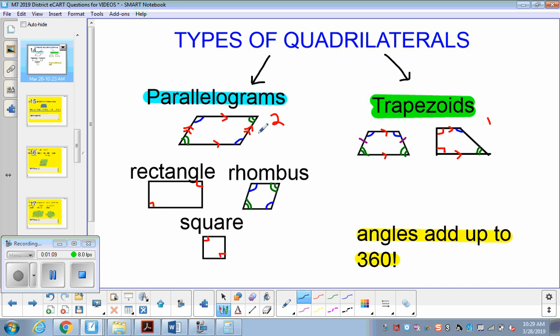If the parallelogram happens to have right angles, now it's called a rectangle. So a rectangle is a type of parallelogram with right angles.